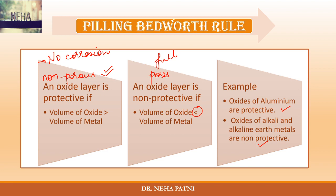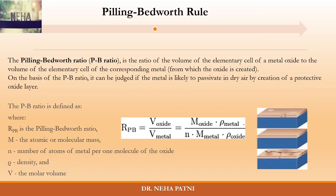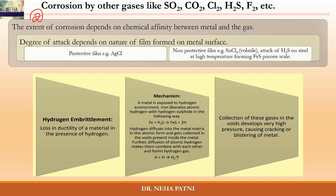That's how the non-protective layer undergoes corrosion — that's the Pilling-Bedworth rule. For more detail, there is the Pilling-Bedworth ratio: take the ratio of the volume of the oxide to the volume of the metal, and based on that ratio you can judge whether the metal will be passivated (protective layer) or not. If you want me to explain this in detail, mention it in the comments. Coming to the second type of corrosion — the first was oxidation corrosion.